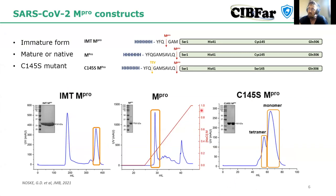Looking at the purification, I draw your attention to the C145S mutant — we found that it could be obtained as both tetramers or monomers. So it is a mix of elements: there are two peaks of different oligomeric states that can be obtained. This will be important later.